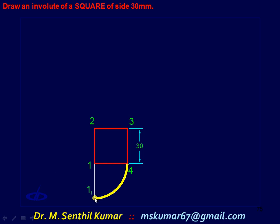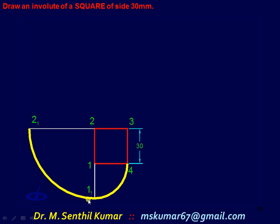After this, if I continue unwinding, the immediate contact point will be point 2. That means with 2 as center and 2-1-1, that is 2 times 30 = 60 mm as radius, draw another arc up to this line. For this segment, draw an arc with 2 as center and 2-1-1 as radius up to this point.